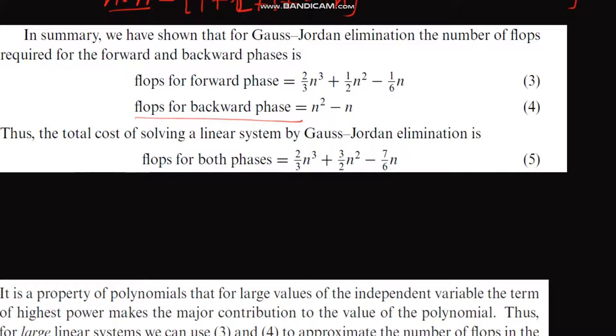When you combine this full, when you add first with the second, then the total cost of solving a linear system by Gauss-Jordan elimination is this. This is the total cost that we need to solve Gauss-Jordan method.